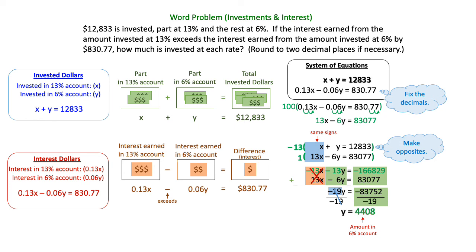I can plug that amount in anywhere I want. I'm going to pull the original invested dollars equation and I'm going to put 4,408 in for Y in that equation. And then I'm going to subtract the 4,408 from both sides and find that X is equal to 8,425. And that is the amount that was invested in the 13% account.